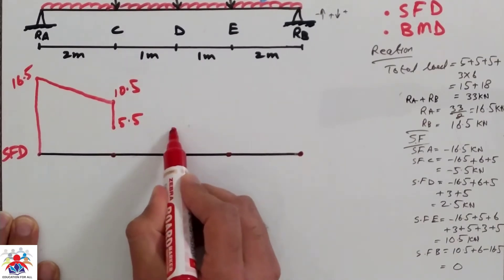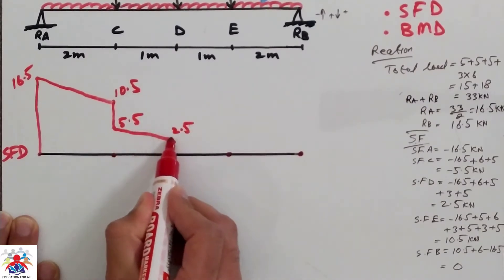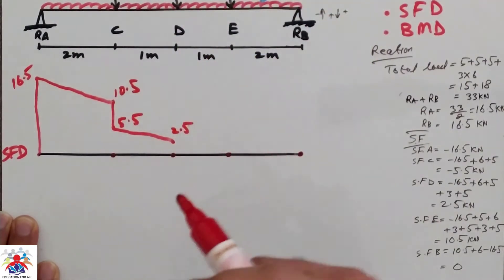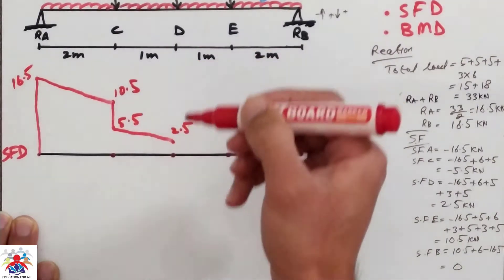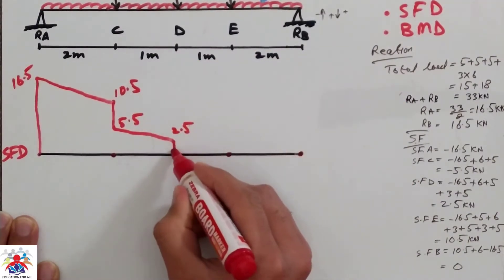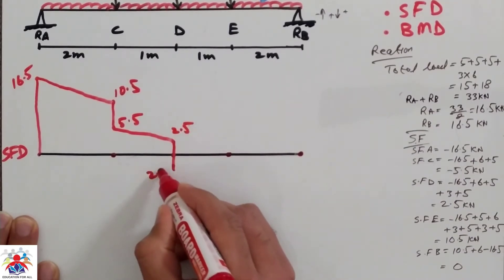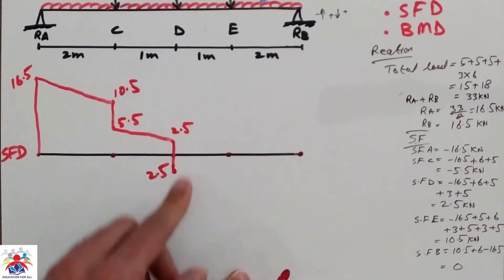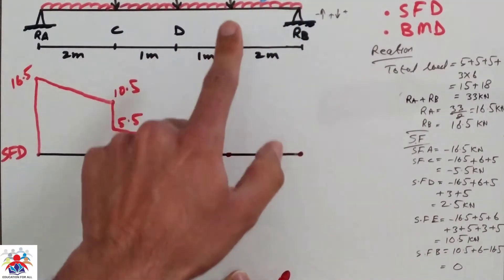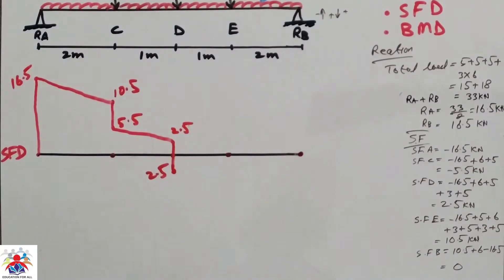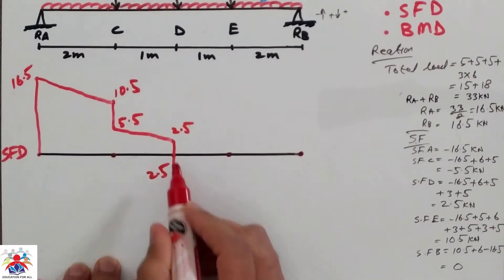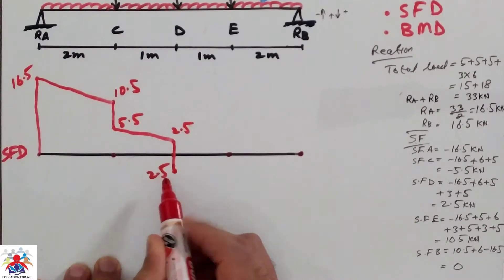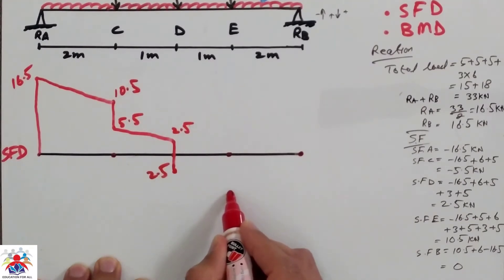At point D we have another 5 kilonewton point load acting downwards, pushing us from 2.5 down to minus 2.5. Then going from D to E we cross one UDL of 3 multiplied by 1 equals 3 kilonewton. Adding 3 to 2.5 gives 5.5, which is shown as a diagonal line rising to minus 5.5 at point E.